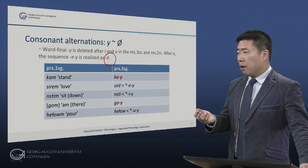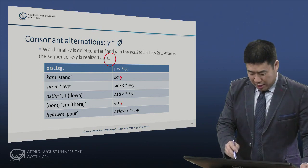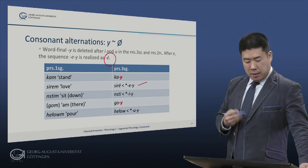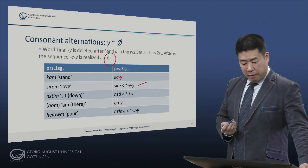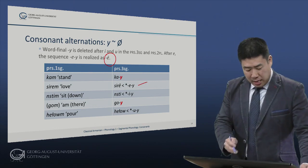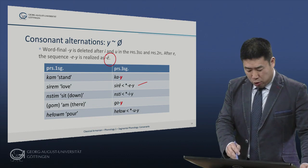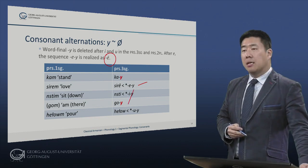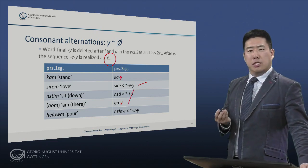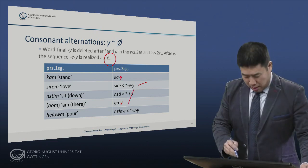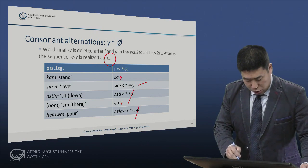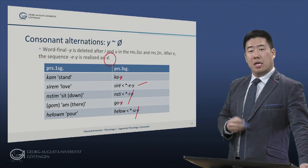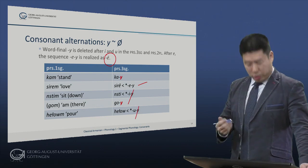So you see the alternations here between, for example, 'kai' meaning 'he or she stands', 'goi' meaning 'there is / there are', but we have 'siray' meaning 'he or she loves', from -ay, and we have loss of the Y in 'nesti' meaning 'he or she sits down', and 'helu' meaning 'he or she pours'.